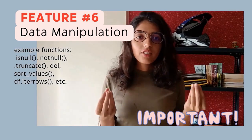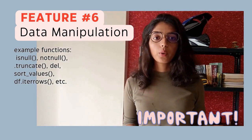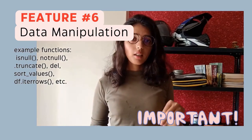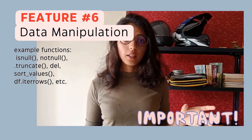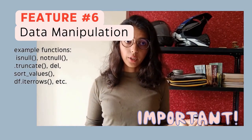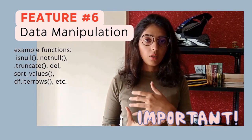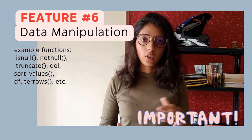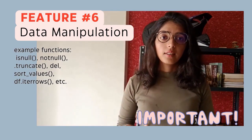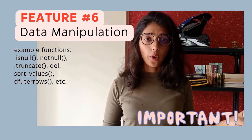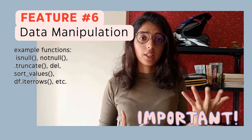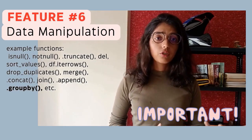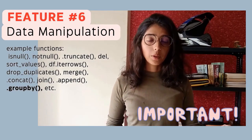The next feature, which is extremely important, is data manipulation. You should know how to add a certain row or column, how to delete or truncate certain rows and columns, and how to iterate over a certain row or column value. You should also be able to deal with missing values, sort your values, perform merges, joins, and concatenation. You can find all of these in the official Python documentation or sites like GeeksforGeeks.